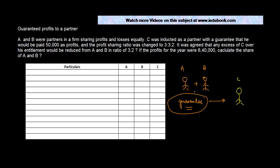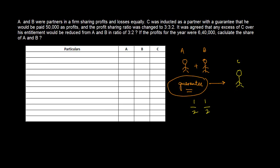The old profit sharing ratio for A and B was 1:1, that is one-half each. They agreed to share profits in the new ratio of 3:3:2, so A gets 3/8, B gets 3/8, and C gets 2/8. The actual profits were six hundred and forty thousand.